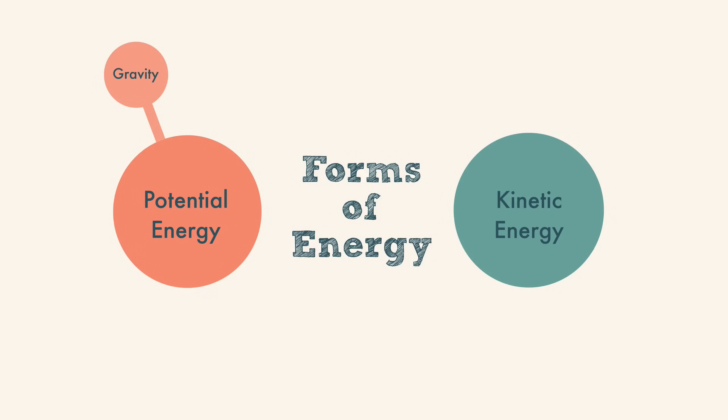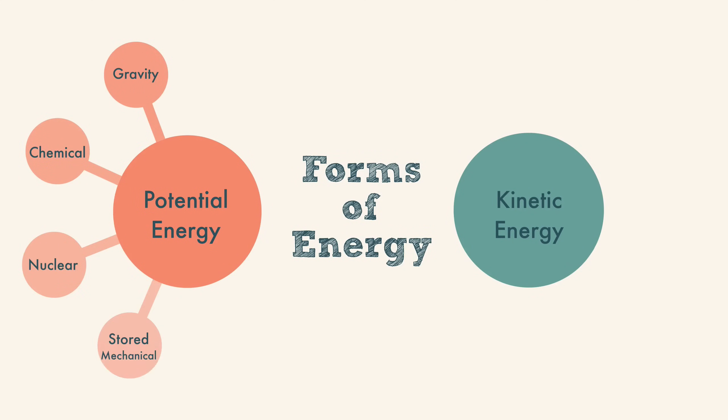Potential energy describes a situation where work isn't currently being done, but it could be done under the right situation. Chemical energy is the energy that's stored in the bonds of atoms. The kinds of atoms and their arrangements will determine how much energy is stored.